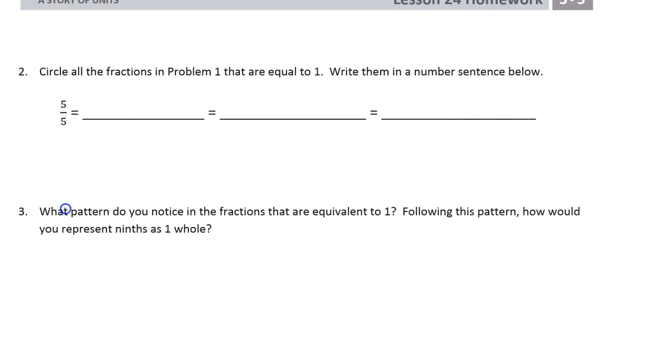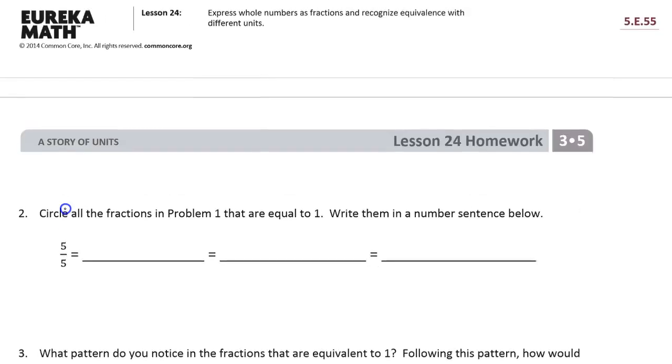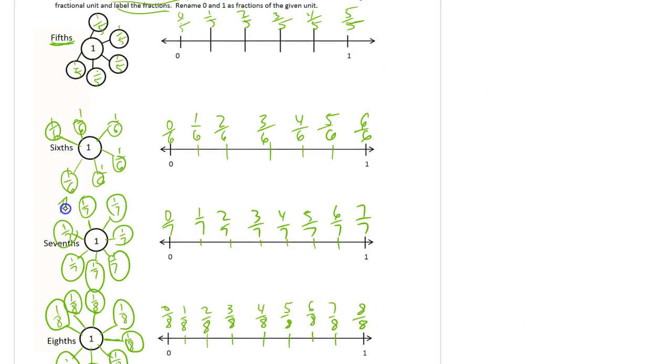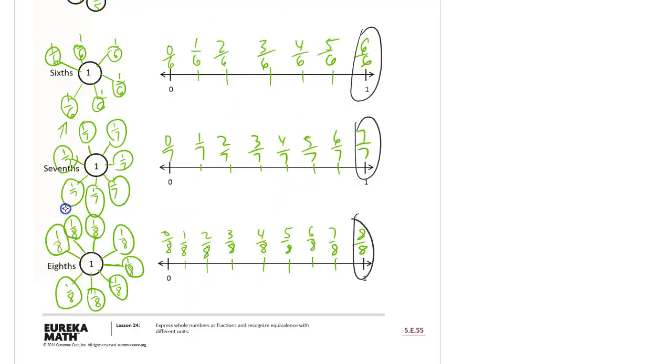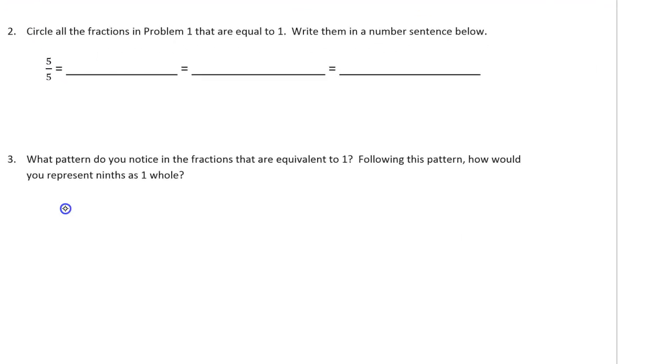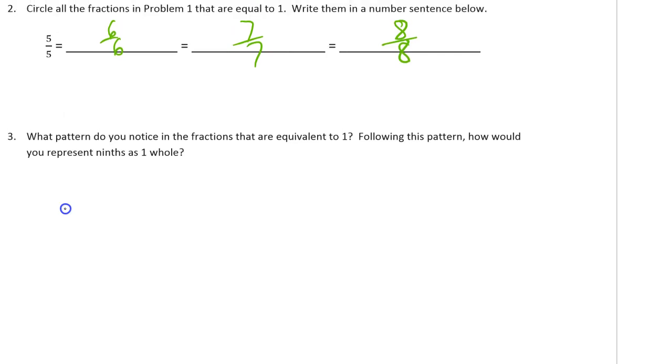Circle all the fractions in problem one that were equal to one whole. Write them in a number sentence below. Alright. So we're going to zoom out and look at this whole page here. What's equal to one whole? Five fifths, six sixths, seven sevenths, and eight eighths.